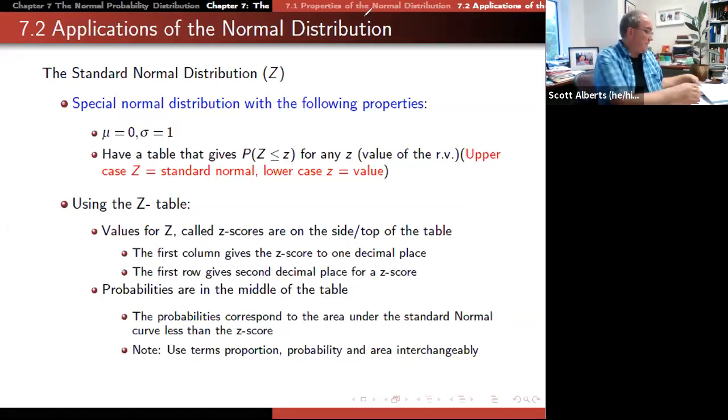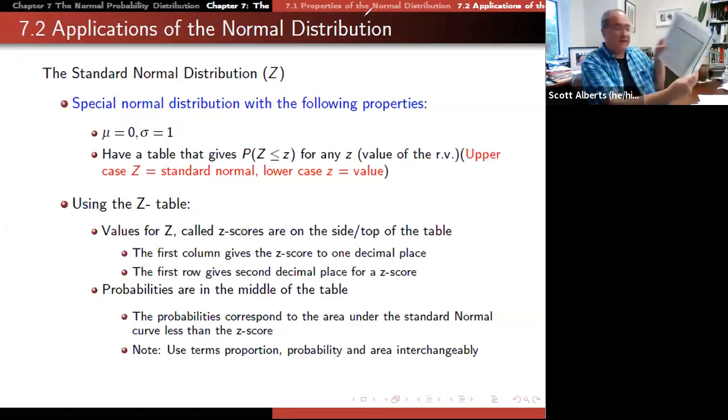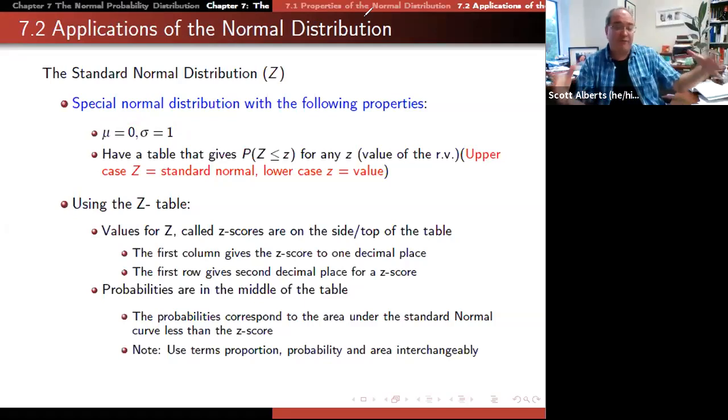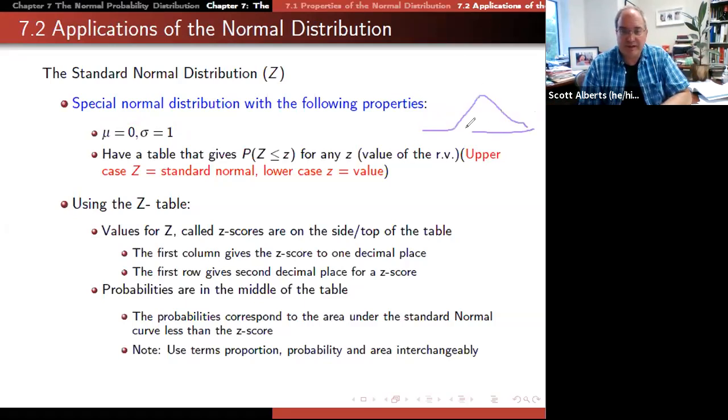In the old days we used it because you had a table in the back of your book and you didn't want to have one for every single standard deviation and mean combination. The way the table works is that it always gives the numbers that are less than. You might say that's backwards from what I want. How am I going to get it to be greater than? You just take one minus that because we can do the complement like we did back in chapter five.